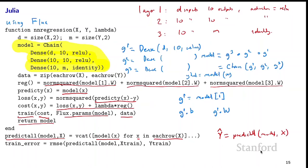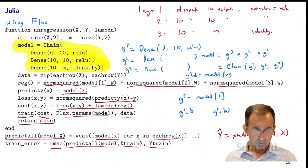To compute the RMS error of our predictions, we call predict_all on our model and our training data, compare that with our true training target variables, and compute the RMSE. Julia's Flux library is quite efficient and clean at allowing us to construct neural networks of any size and train them.